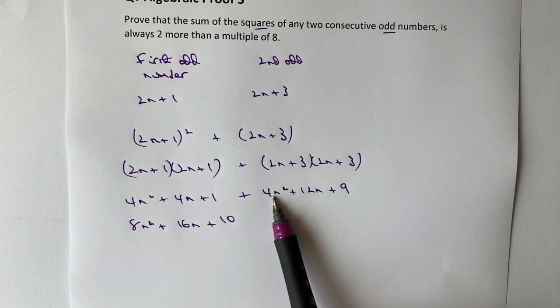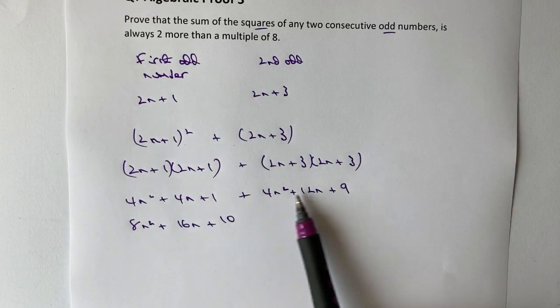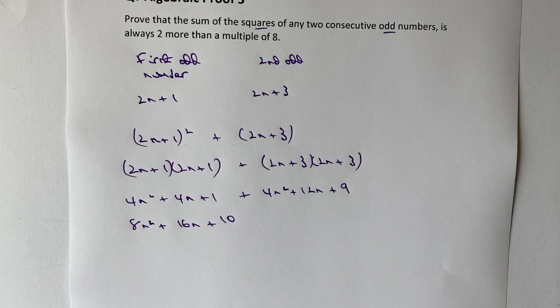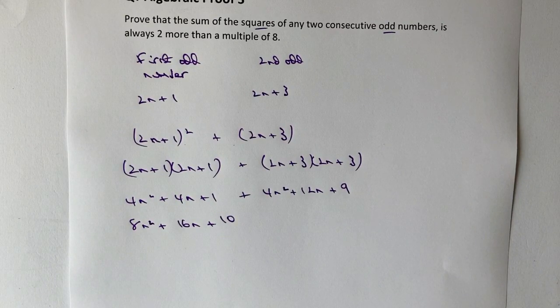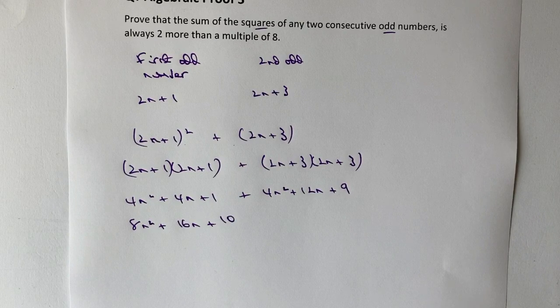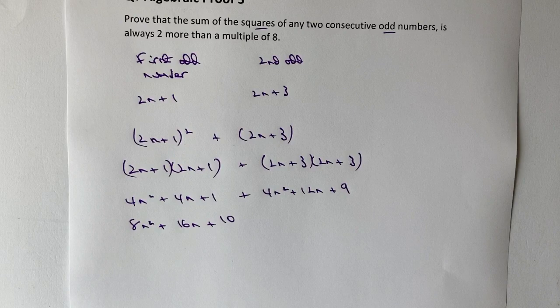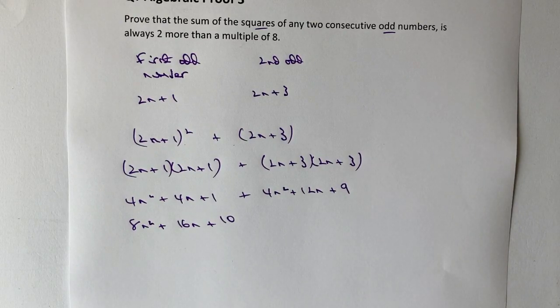So 4n squared, 4n squared, 4n, 12n and 1 plus 9 is going to be 10. So I'm in the process now where hopefully I've got everything put together in a nice neat little package, which is the expression for the sum of the squares of two consecutive odd numbers. Now, what I need to do is prove there's always two more than a multiple of eight. So let's have a look first at how we could write this.